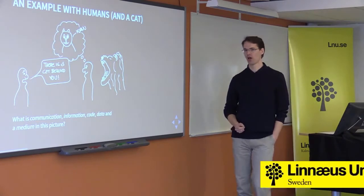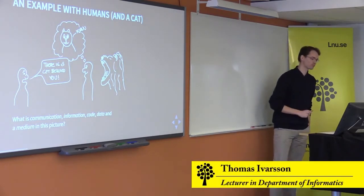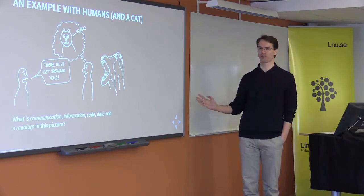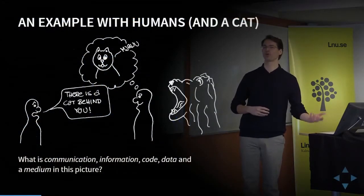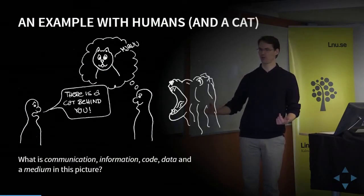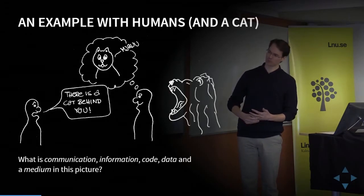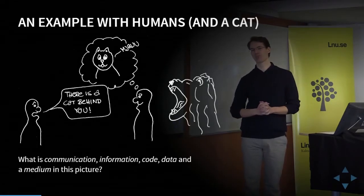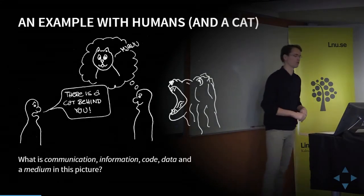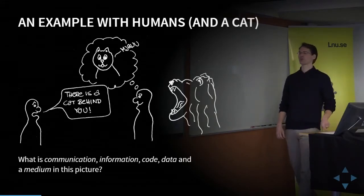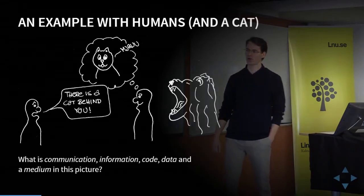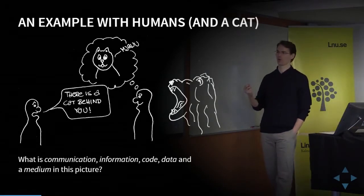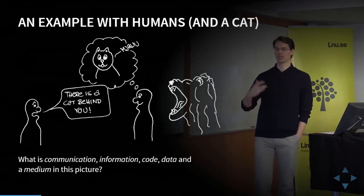The information is that the cat or lion is behind the man. The communication is trying to convey that information from the person on the left to the person on the right. From a communication perspective this would be somewhat failed communication, because the person on the right seems to be imagining a cute little kitten rather than a large predator. The code is the word choice, the grammar, the syntax of that which is spoken — 'There is a cat behind you' — that is the code, or the English language in this case.